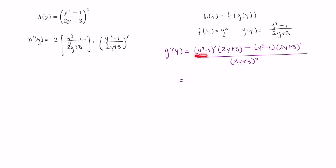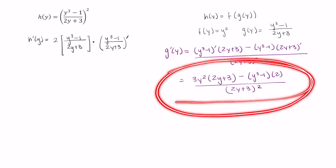The derivative of y cubed minus 1 is just 3y squared. The derivative here of 2y plus 3 is just 2. Now please take a moment, pause your video, and work this out algebraically. So please flex your algebra muscles and practice cleaning up this expression.